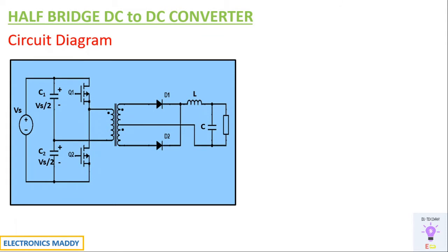This is the circuit diagram of a half bridge DC to DC converter. It basically contains two input capacitors C1 and C2, which will be having the ability to store a voltage of VS/2 each. The values of C1 and C2 will be equal, and consequently you have two input switches Q1 and Q2. The secondary side of the transformer is basically quite similar to a push-pull configuration, so the only change is with respect to the primary side. Let us try to understand how DC to DC conversion takes place with respect to this configuration.